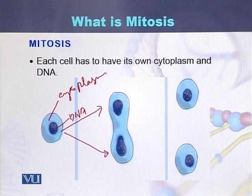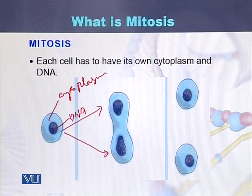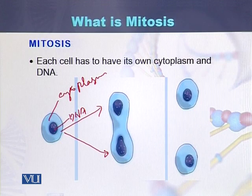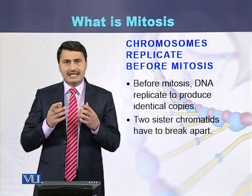The two cells which are produced from the parent cell are genetically identical to the parent cell. Before the process of mitosis, DNA replicates.